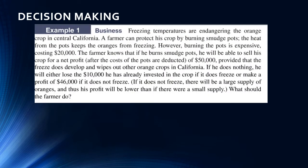This is a pretty packed example, so I'm going to read it first and then we'll talk about it. Freezing temperatures are endangering the orange crop in central California. A farmer can protect his crop by burning smudge pots — the heat keeps the oranges from freezing, but burning the pots is expensive, costing $20,000. If he burns smudge pots, he will be able to sell his crop for a net profit of $50,000 after costs, provided the freeze does develop. If he does nothing, he will either lose the $10,000 he has already invested if it does freeze, or make a profit of $46,000 if it does not freeze, since a large supply of oranges lowers his profit. What should the farmer do?